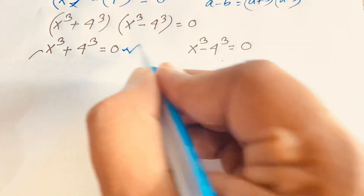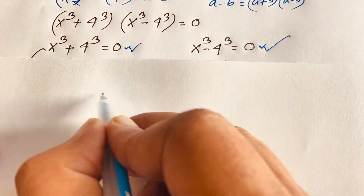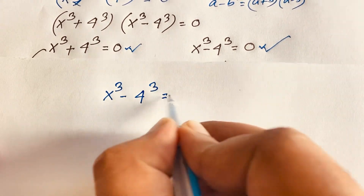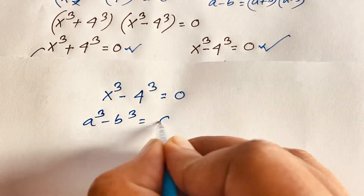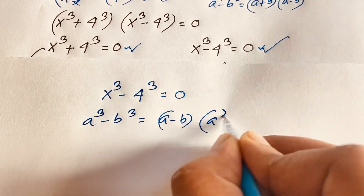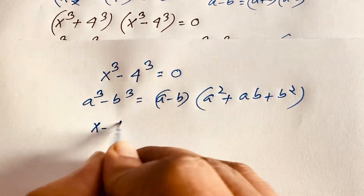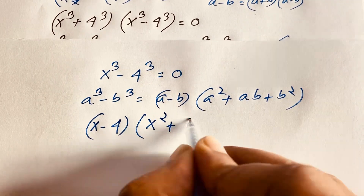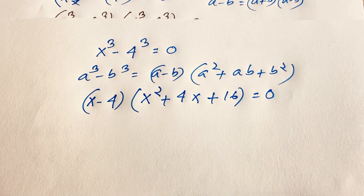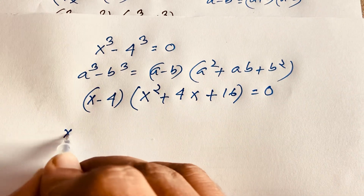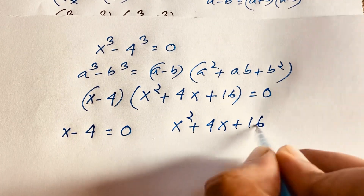We apply the identity a cubed minus b cubed equals a minus b times a squared plus ab plus b squared. So the equation becomes x minus 4, times x squared plus 4x plus 16, equals 0. Again we have two sub-cases. First: x minus 4 equals 0. Second: x squared plus 4x plus 16 equals 0.